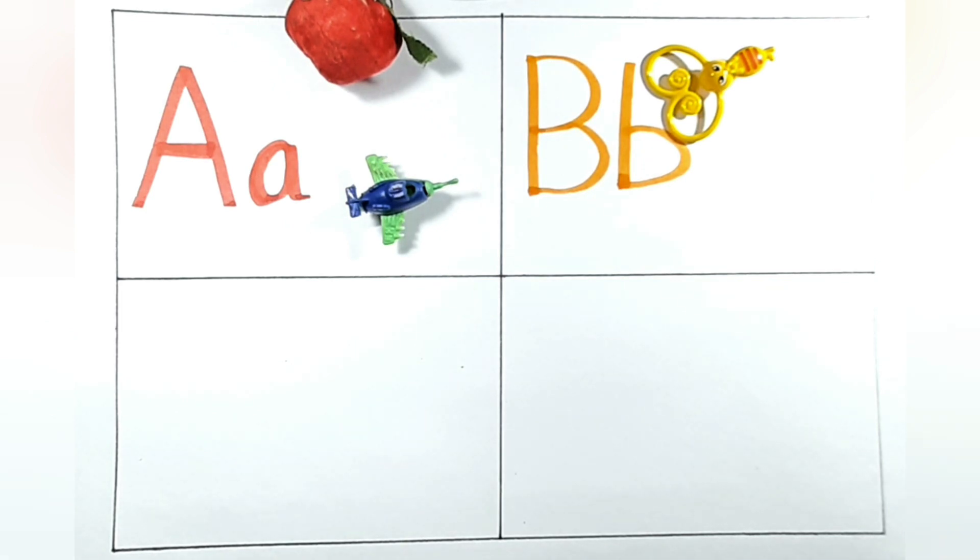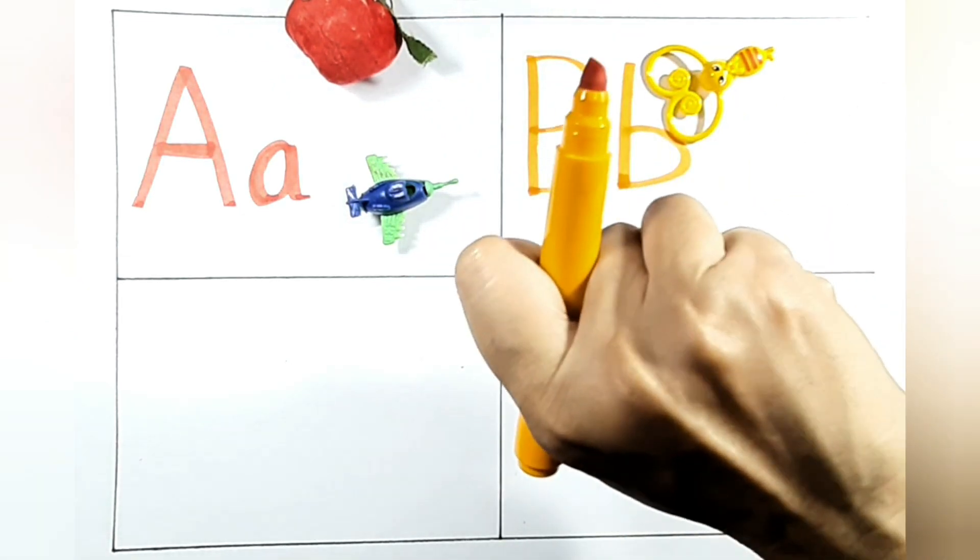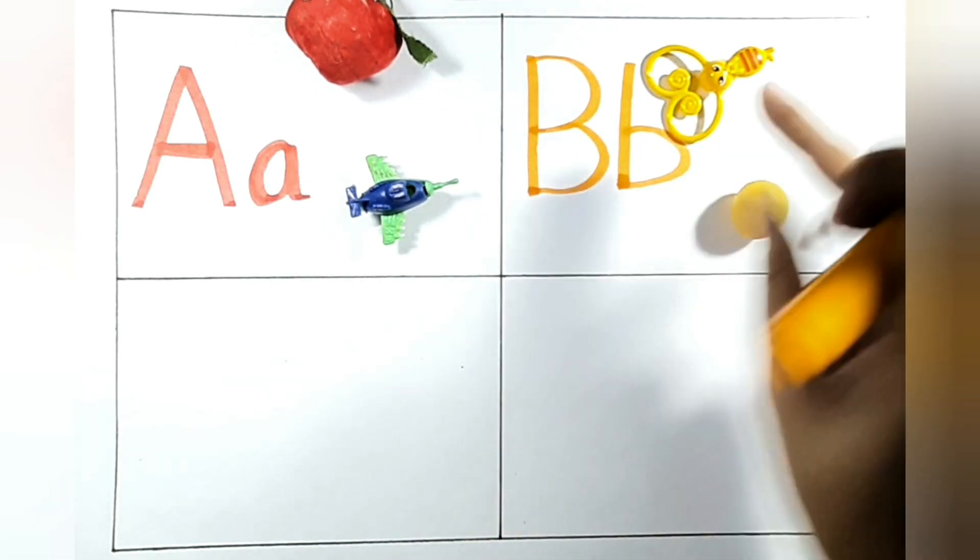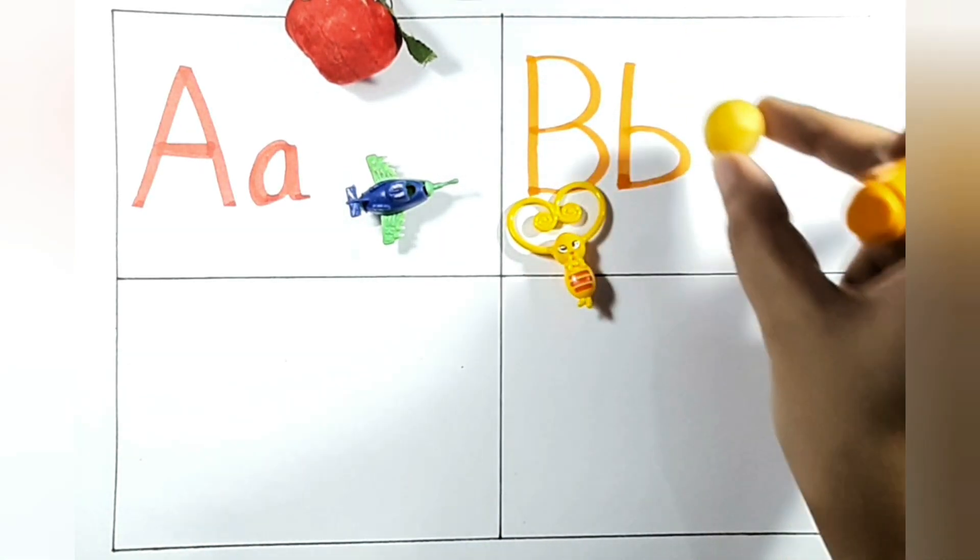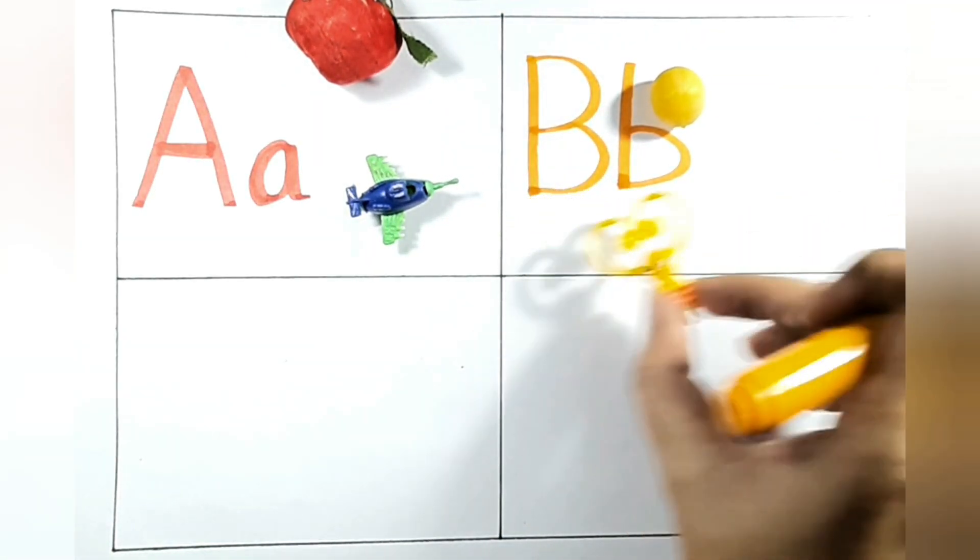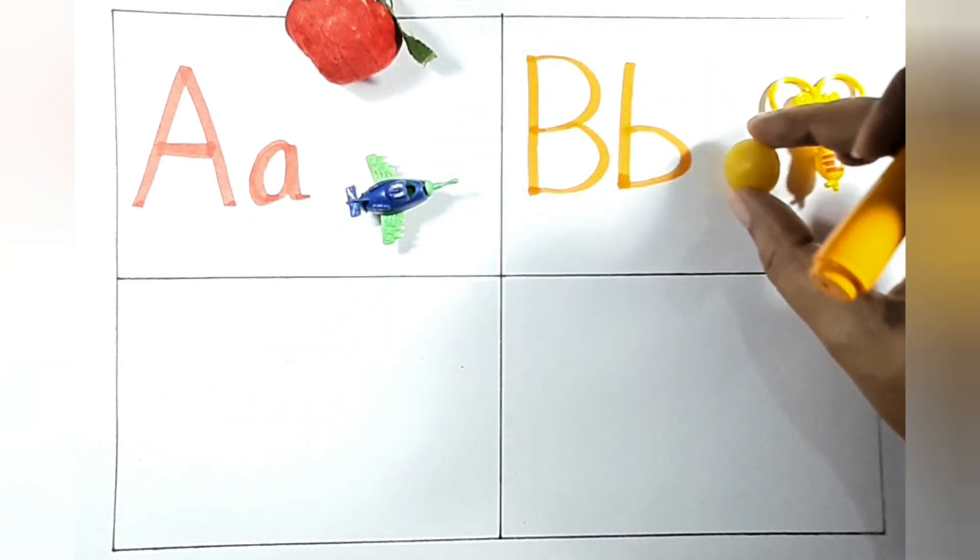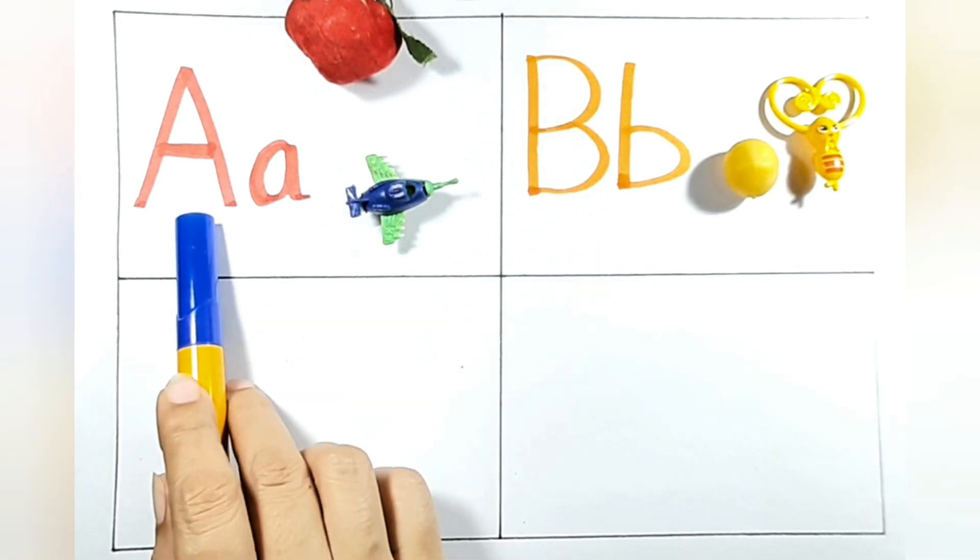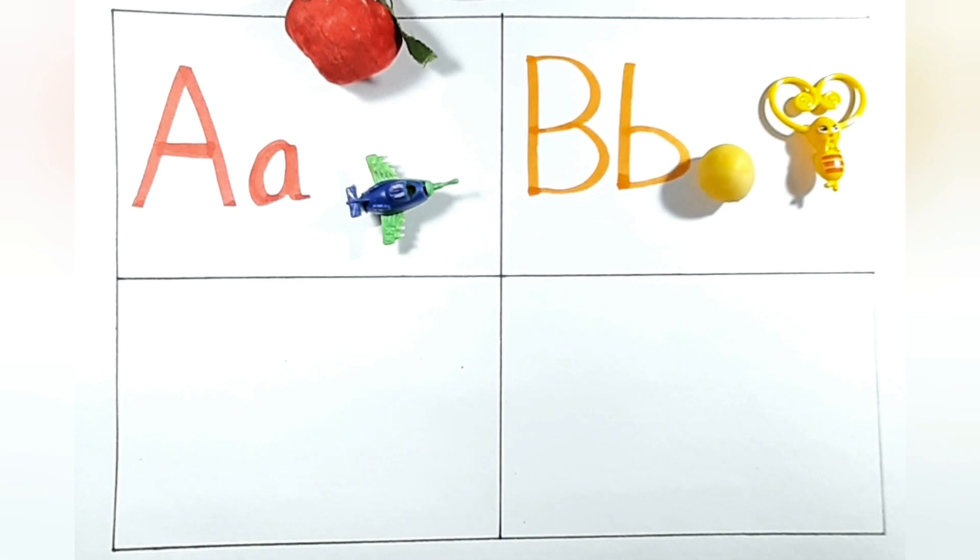One more thing, yes, yes, B for ball, a little ball. B for bee, B for ball, B for ball. I will show you two objects with each alphabet. Now after A, B, I will write here in the third column. What will I write? Yes, after A, B we will write, say C.